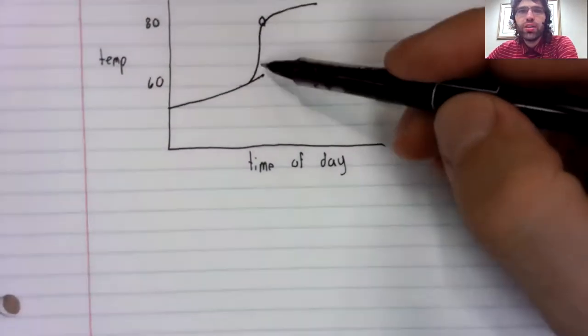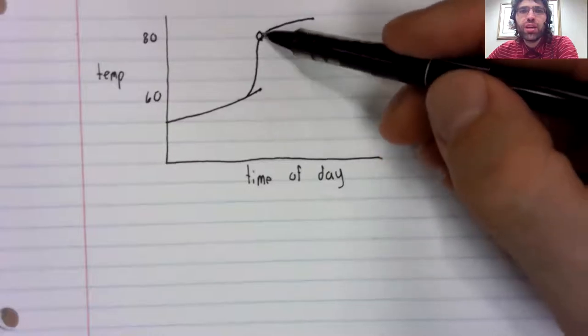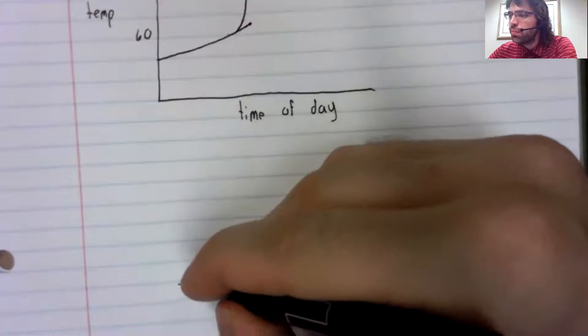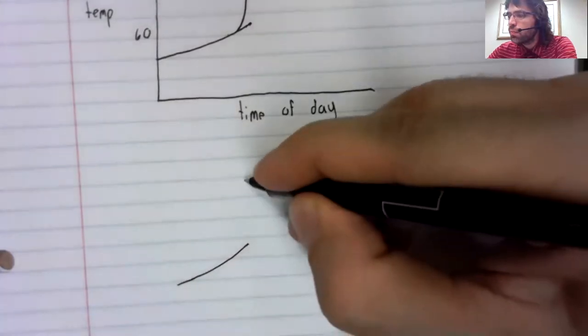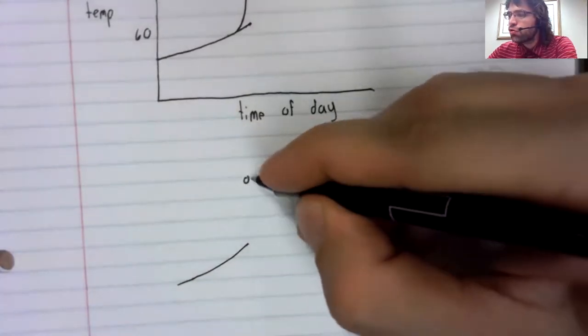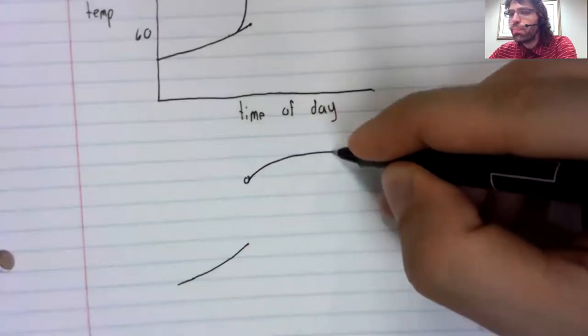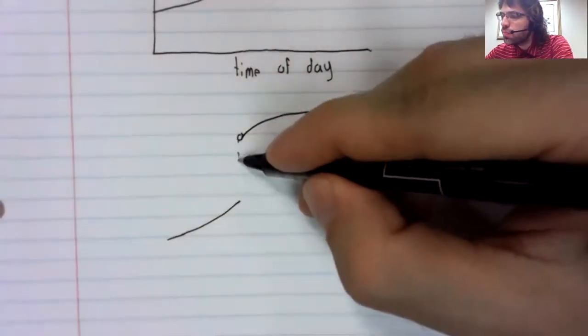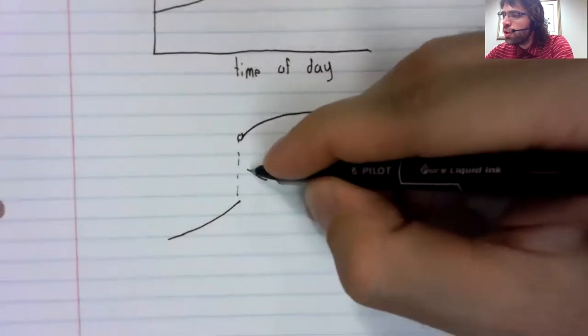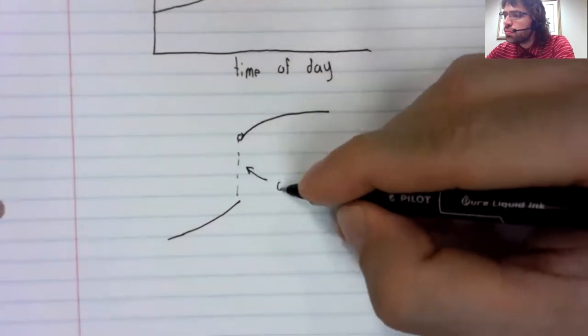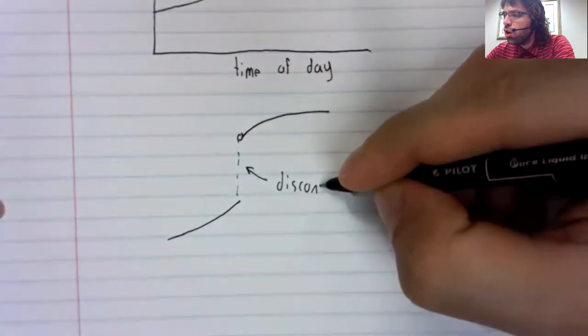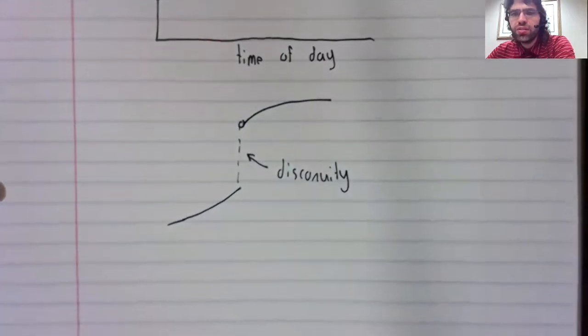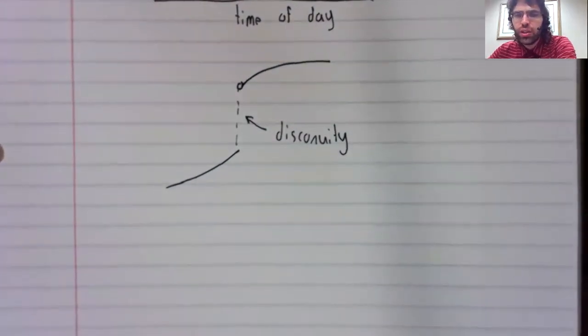A point in the graph where we see behavior like I had drawn, where the graph jumps like that, such a point is called a discontinuity.